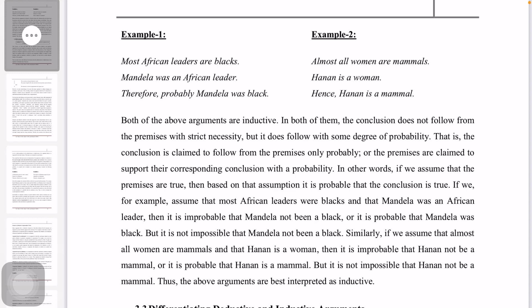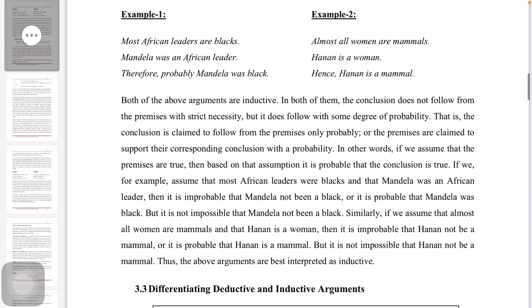For example, assume that most African leaders are black and that Mandela was an African leader — then it is improbable that Mandela was not black, or in other words, it is probable that Mandela was black.